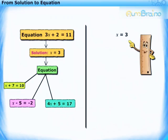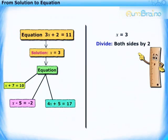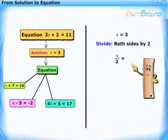To make one more equation, let us now divide both the sides of the solution by 2. We get x upon 2 is equal to 3 upon 2.